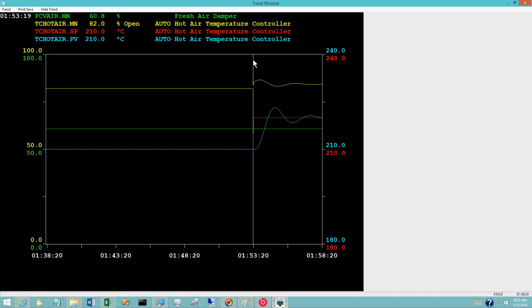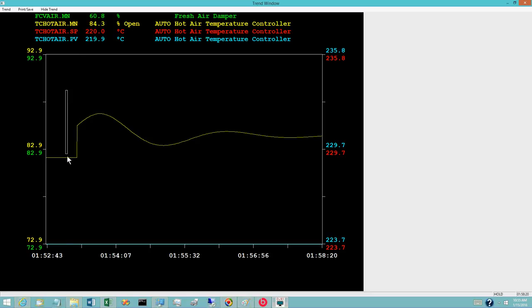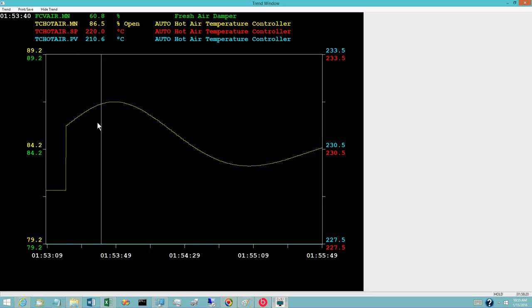And zoom in on smaller and smaller portions of the response in the controller output. Except for the proportional kick associated with the setpoint change, the output changes by a small amount on a one second interval. For this example, shorter sampling times would not improve loop performance.